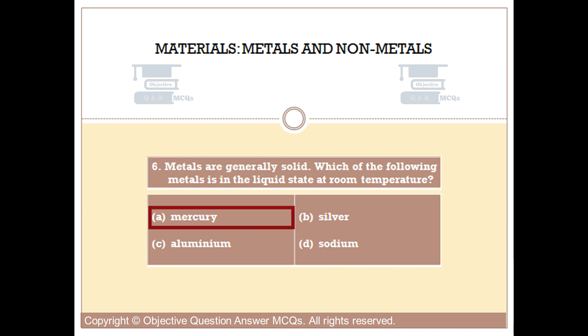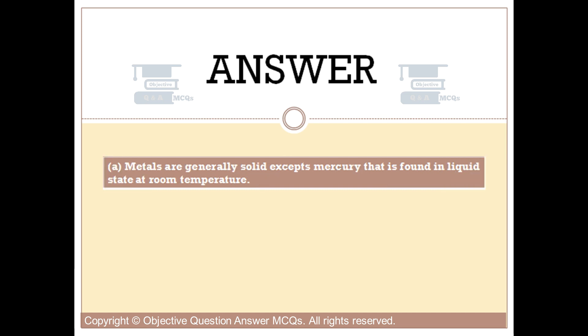The right answer is option A. Metals are generally solid, except mercury, which is found in liquid state at room temperature.